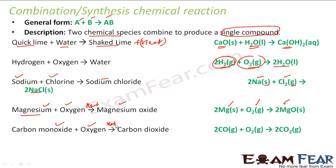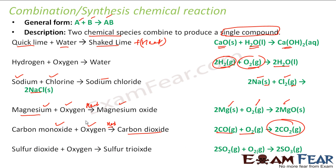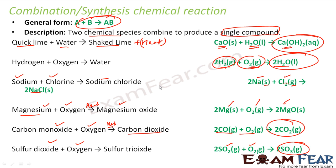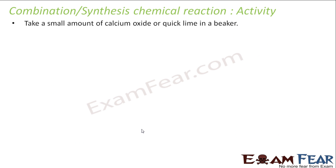You have carbon monoxide and oxygen — combining these gives carbon dioxide. You have sulfur dioxide and oxygen — combining these gives SO₃, a gas. The key point in all these reactions is that the reactant side has two items and the product side has one item — two inputs, one output. That is the example of a synthesis or combination reaction.